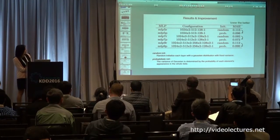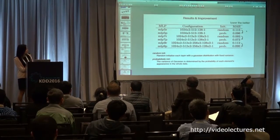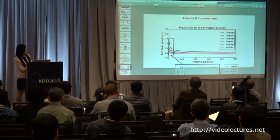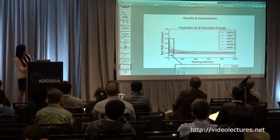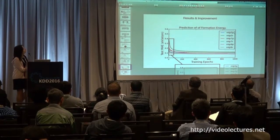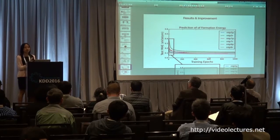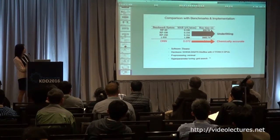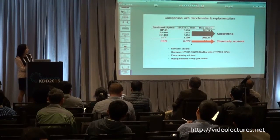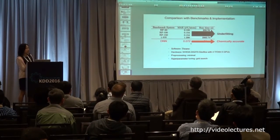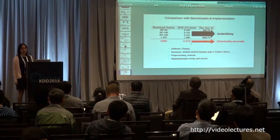Comparing random initialization and probabilistic initialization — lower is better — you consistently see improvement with probabilistic initialization across the same network structures. We also compared with benchmarks including nearest neighbors and several variants of random forest, and our approach performs best. Those baselines are definitely underfitting. Our result is what's called chemically accurate — within the 0.1 error rate that even simulation methods can only expect.